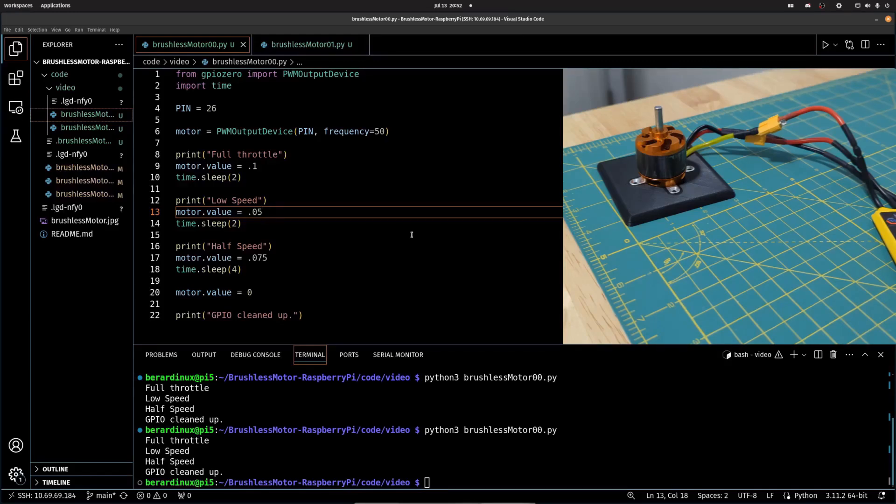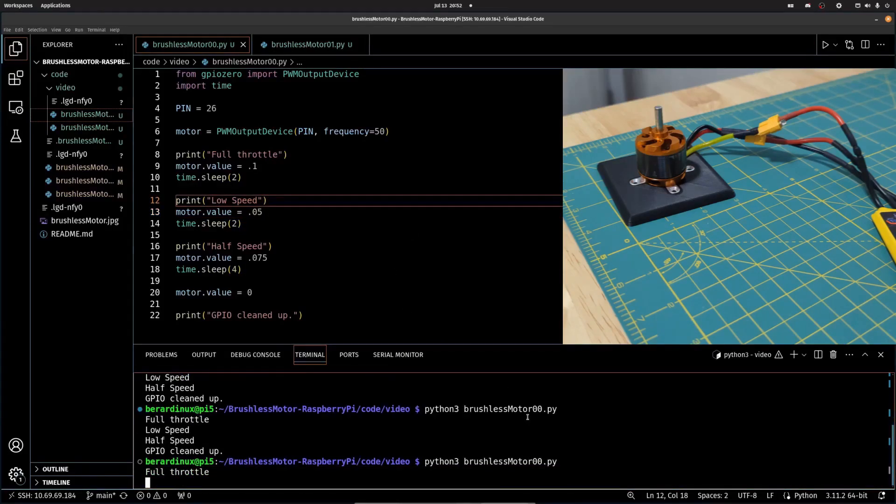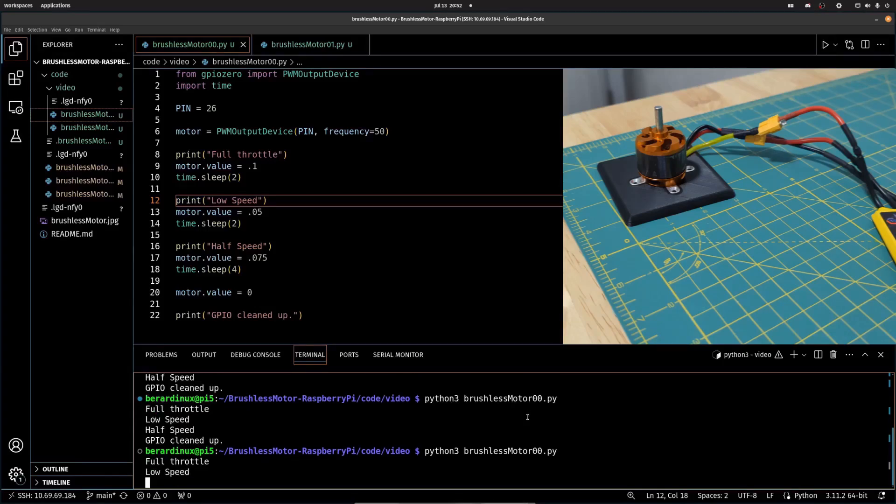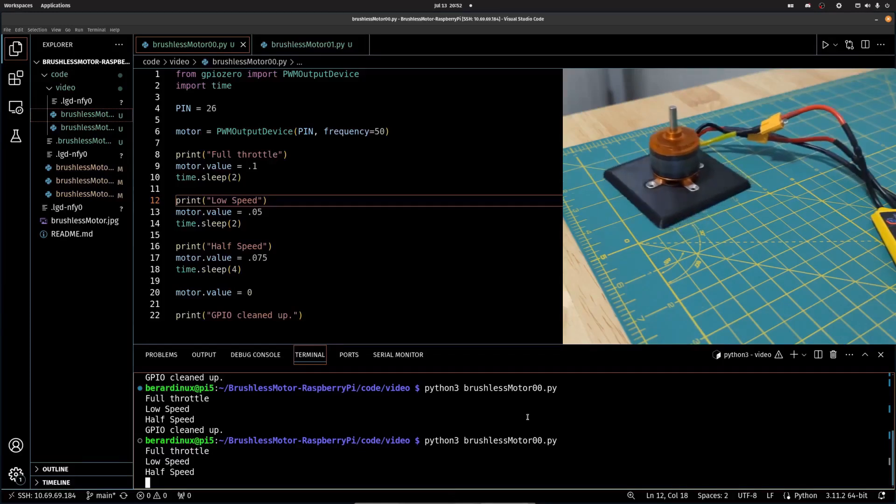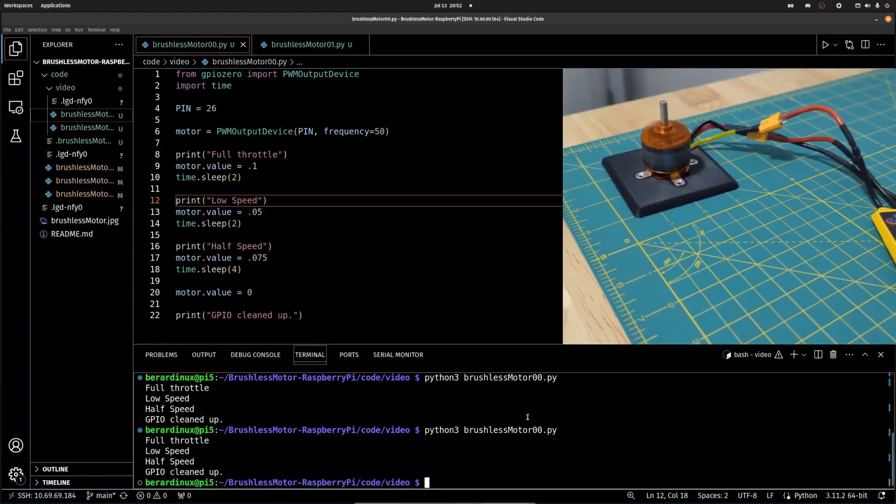You can see that the script actually did work, but the problem is that it won't have any variability. So, I just ended up turning off my power supply, turning it back on so that the ESC would reset. And then we can try this again. You can see the series of beeps that it does whenever it's initializing. And then the half speed, normally it will operate.